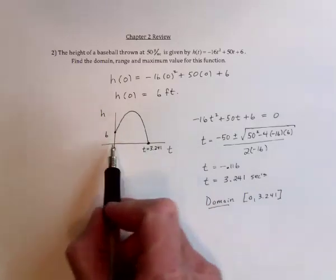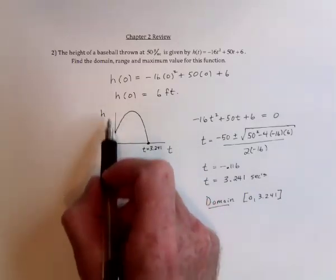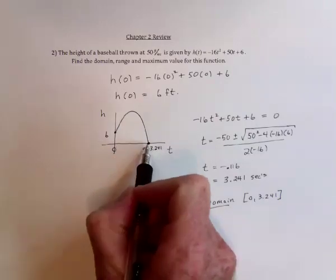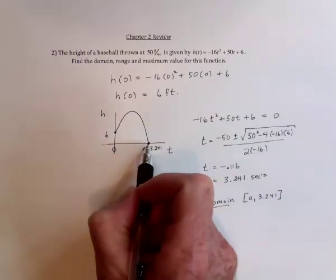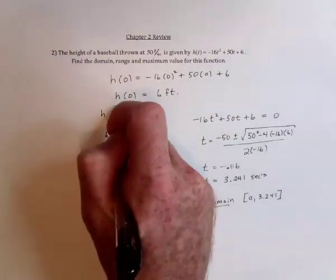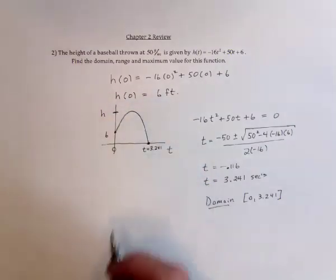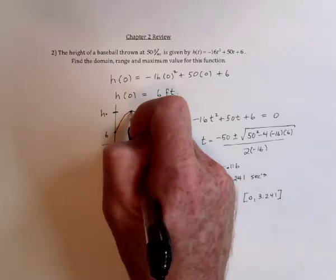This axis is telling us the domain and then this axis will tell us the range. At the very lowest point, it's right here at 0. We now need to find out what about the very highest point, h equals what? So when does it reach the maximum?